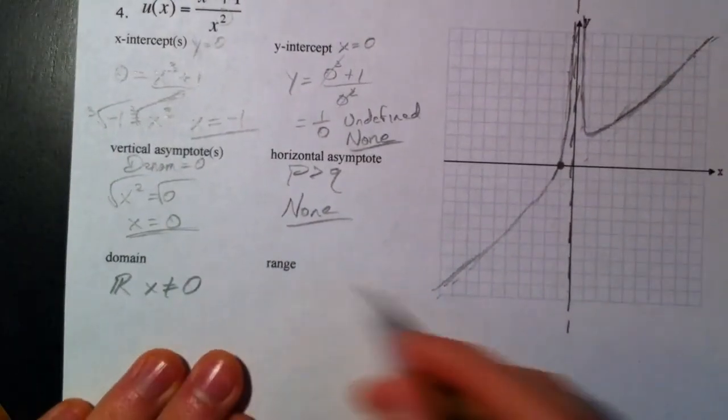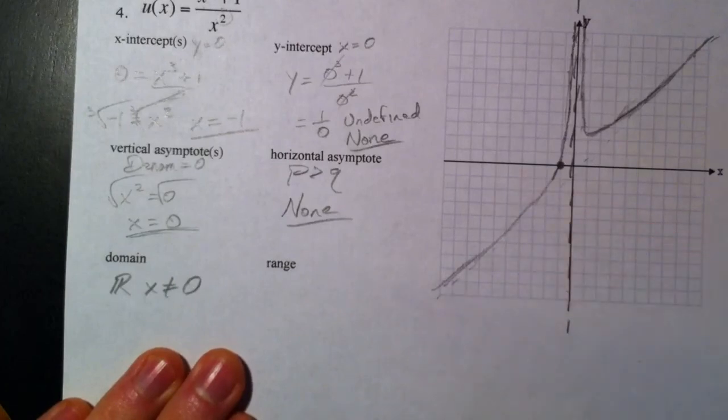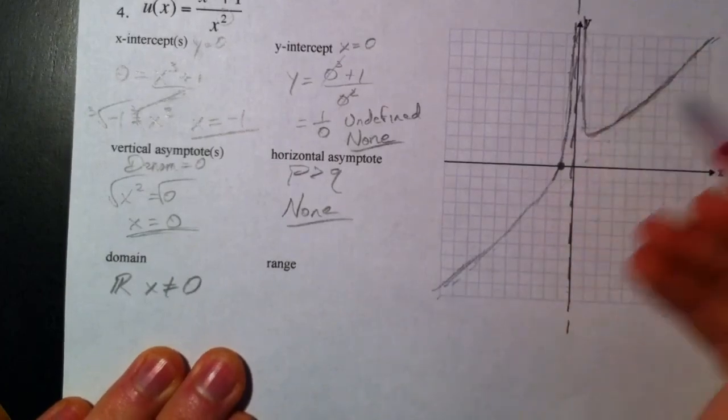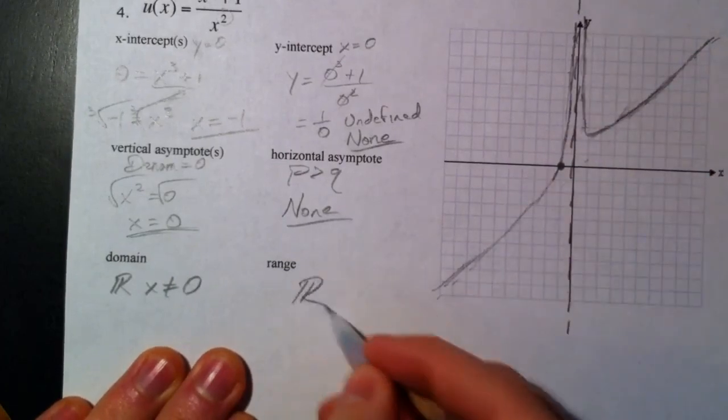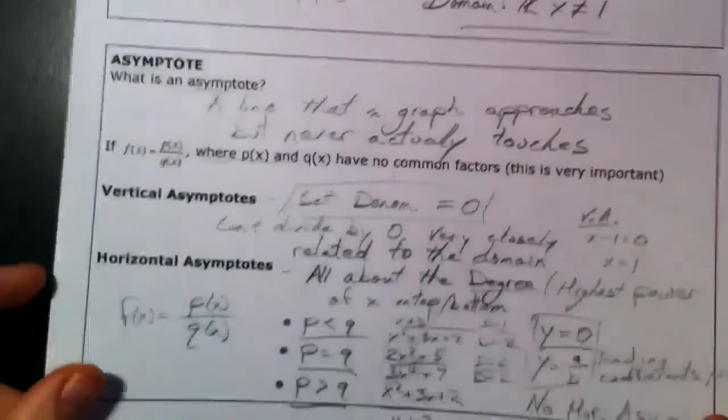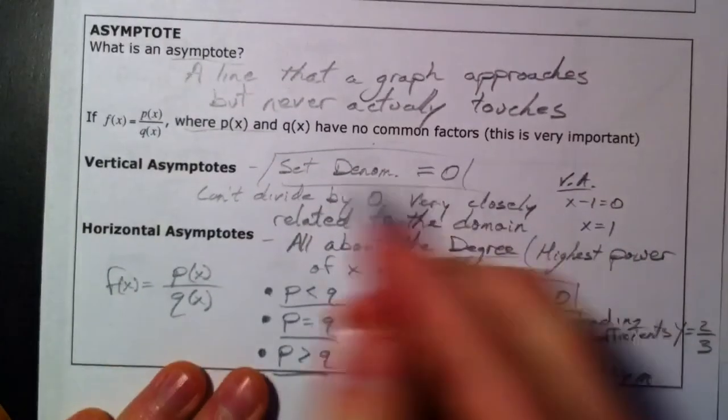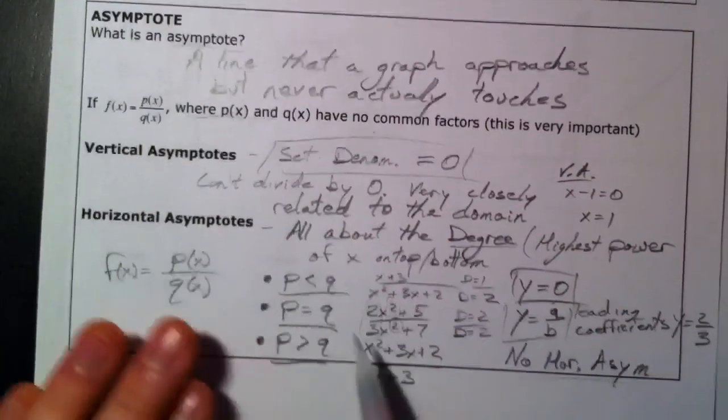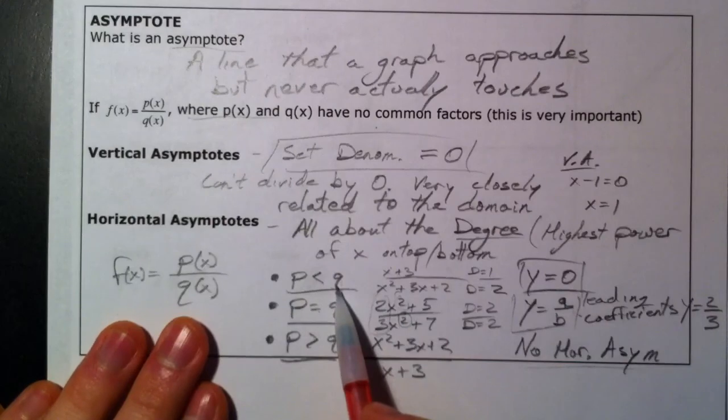Forgot about the range. Our range - the y values will keep going down this way and none of them were skipped along the way, and so our range is just going to be all real numbers.